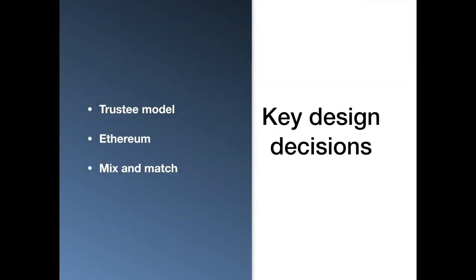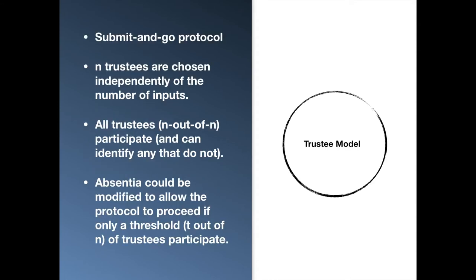Now let's go over some key decisions for our blockchain-based secure function evaluation protocol. As our protocol has the submit-and-go property, someone has to perform the actual evaluation of the function using the inputs — these entities are called trustees. N trustees are chosen independently of the number of inputs. In Absentia, we require all trustees to participate in the protocol, which is n-out-of-n, and they can identify any trustee that didn't participate. This can also be modified to let the protocol run with a threshold of trustees participating, which is t-out-of-n.